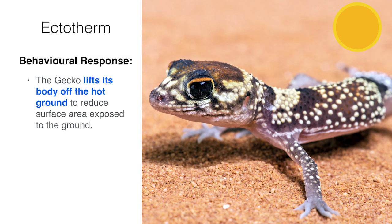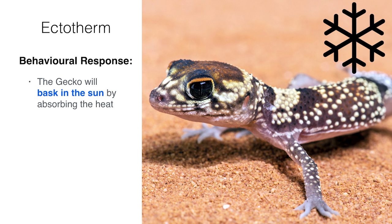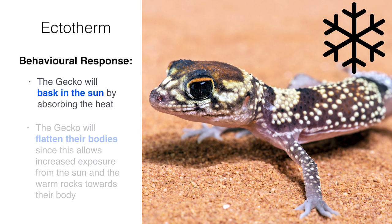It isn't all bad for the gecko, as there are some behavioural responses it undergoes to minimise body temperature change. In hot temperatures, the gecko lifts its body off the ground to reduce the surface area exposed to the hot surface. It also seeks shade and becomes active overnight. For cold temperatures, the gecko will bask in the sun and absorb the heat. They will even flatten their bodies to allow increased heat exposure from the sun and warm rocks. To sum it up: geckos seek shade, become nocturnal, and avoid pressing up against hot surfaces on hot days. On cold days, geckos sunbathe and will actively press up against hot surfaces.